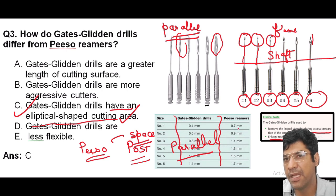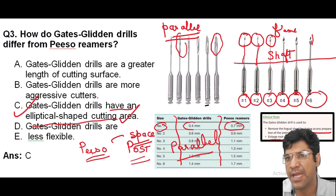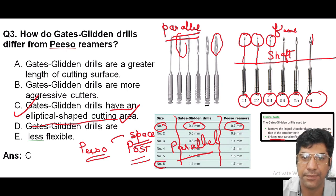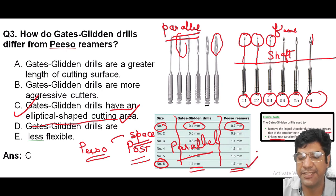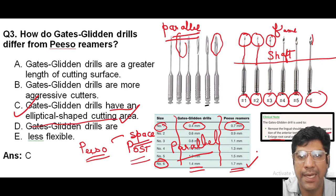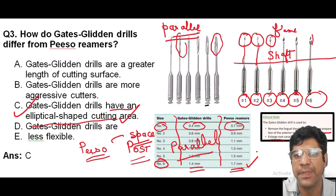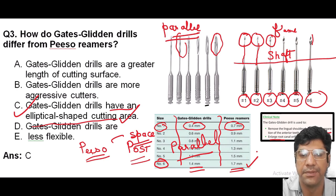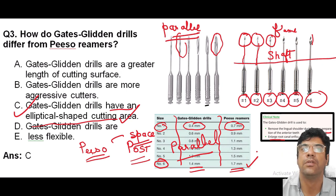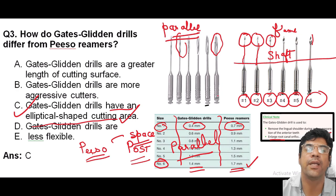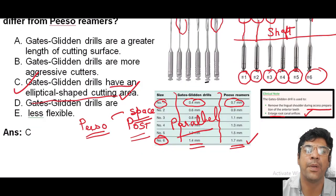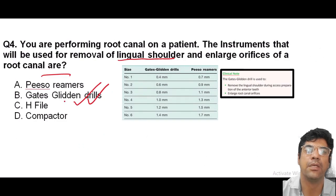Piezo reamer number one has a 0.7 mm size whereas GG drill number one is 0.4 mm. For number six, the GG drill is 1.4 mm and the piezo reamer is 1.7 mm. The parallel-sided post space created by the piezo reamer ensures a properly fitting post essential for the long-term success of the restoration. For removing the lingual shoulder use the GG drill; for preparing post space use the piezo reamer. Answer is B.